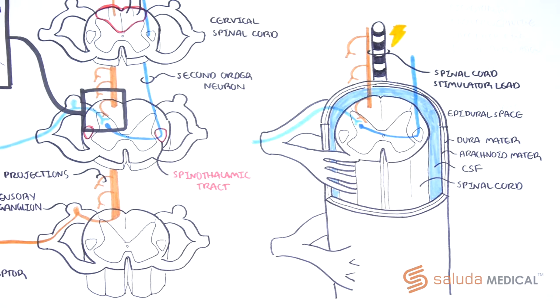Originally, spinal cord stimulation was called dorsal column stimulation, as these are the target structures for the therapy. Spinal cord stimulation activates mechanoreceptors, thereby eliciting action potentials within multiple dorsal column axons. These are referred to as evoked compound action potentials, or E-caps. We will discuss these further in a future video.